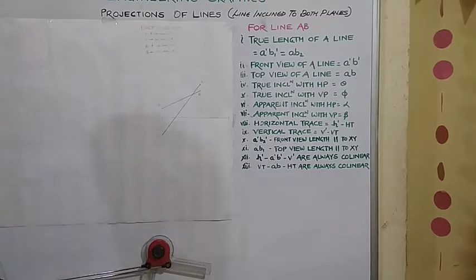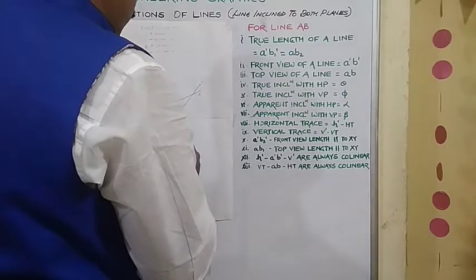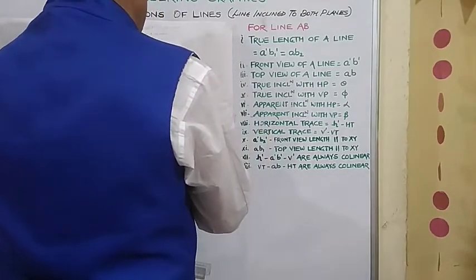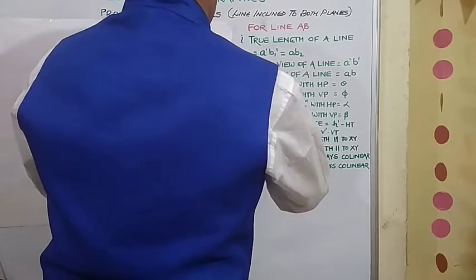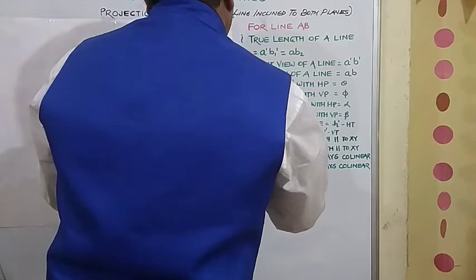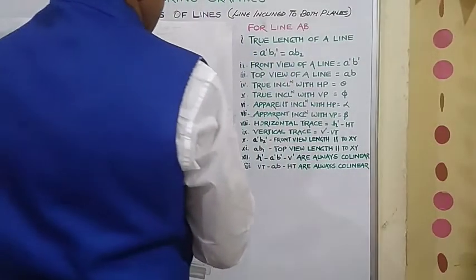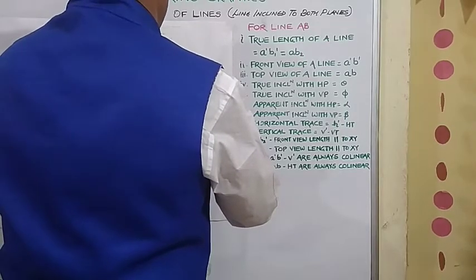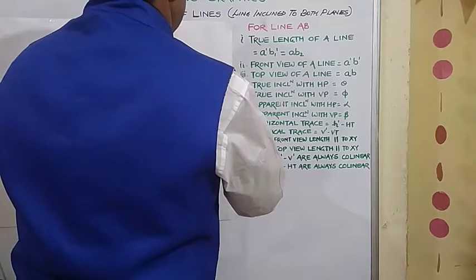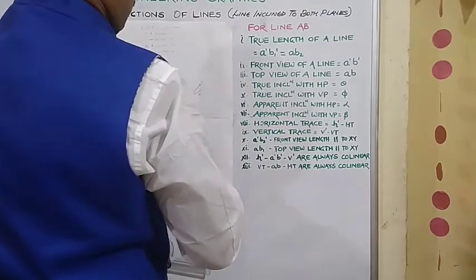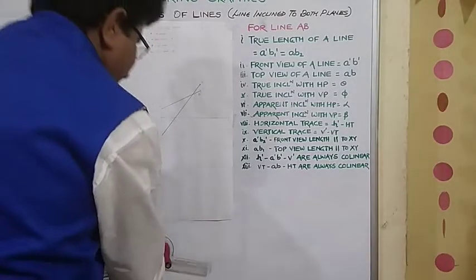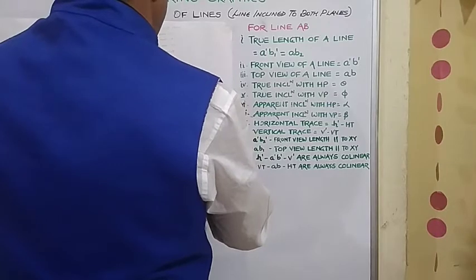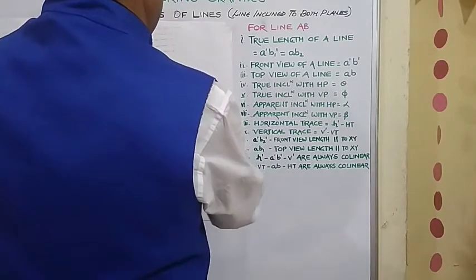Now with the help of compass, we will rotate this front view distance as well as top view distance. So keeping compass on A taking A dash, keeping compass on A taking AB distance, we will draw one arc. Draw the arc. Now same thing we are supposed to do. We are going to draw arc keeping compass on A dash B dash. Faint arcs are to be drawn.